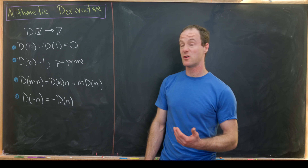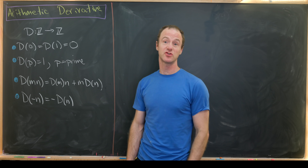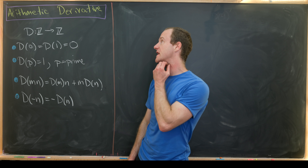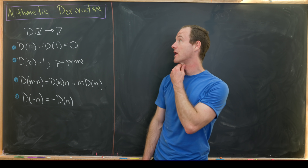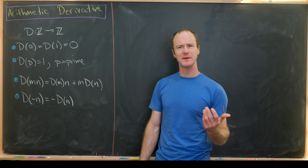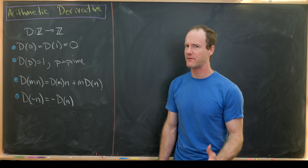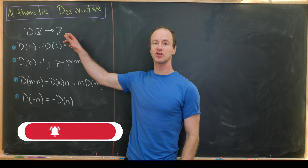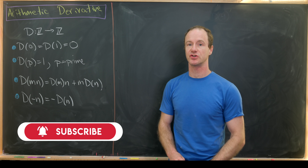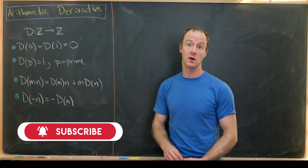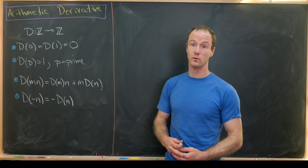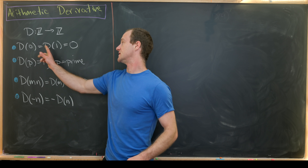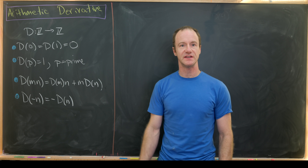Longtime viewers of the channel may know that I have an interest in generalizations of the derivative. I learned about a new one today known as the arithmetic derivative. There may be more than one. It's a function defined from integers to integers with the following four characteristics. First, d of 0 equals d of 1, which equals 0.